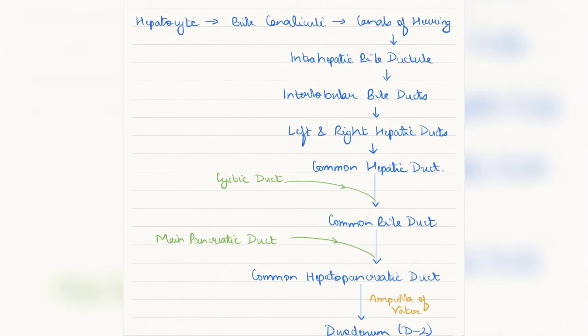From there, it goes into the interlobular bile ducts which further gets divided into the left and the right hepatic ducts, which join to form the common hepatic duct. Common hepatic duct receives bile from the gallbladder where it is stored via the cystic duct. Cystic duct and common hepatic duct join together to form the common bile duct.